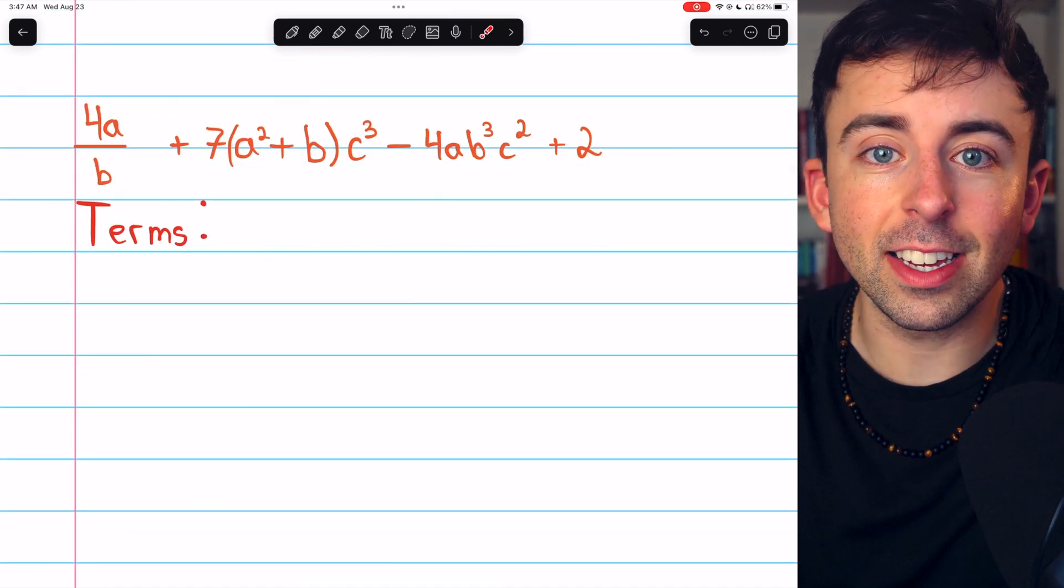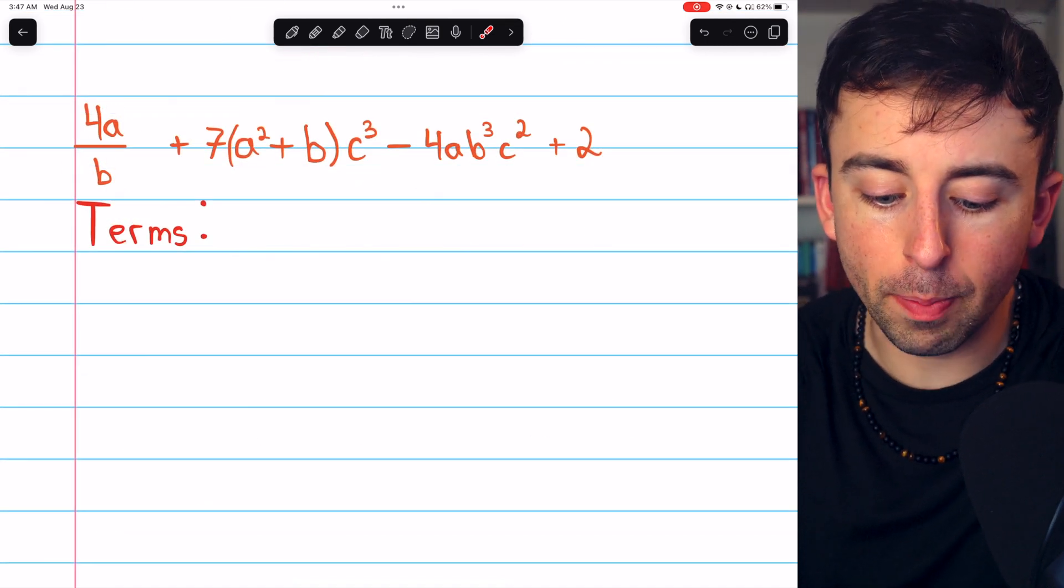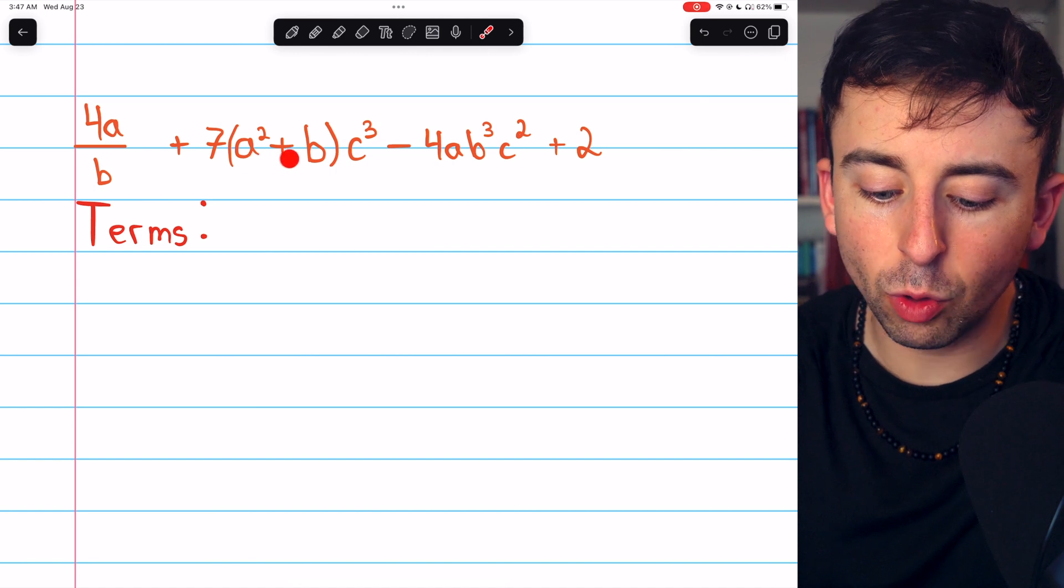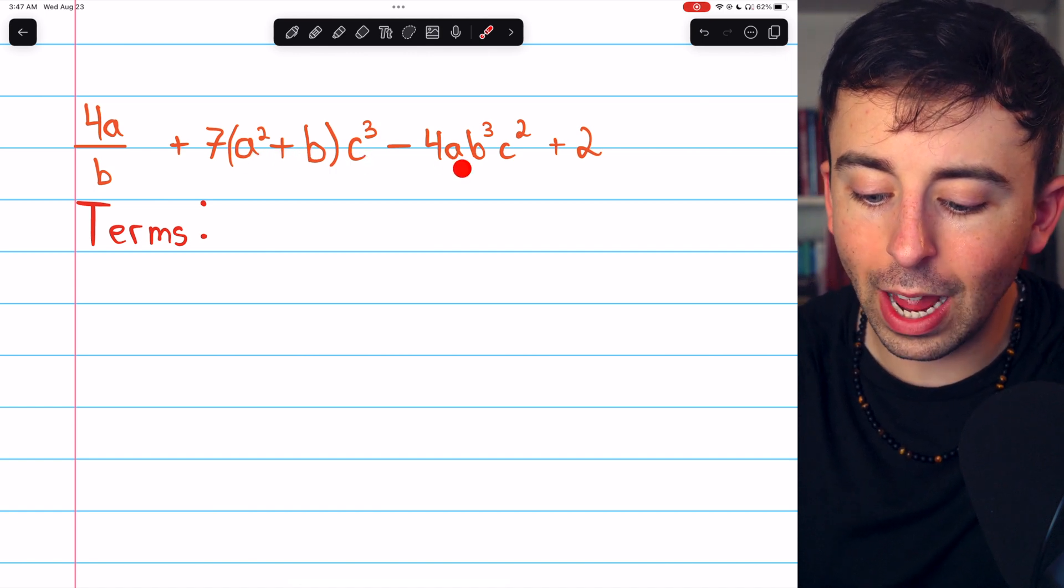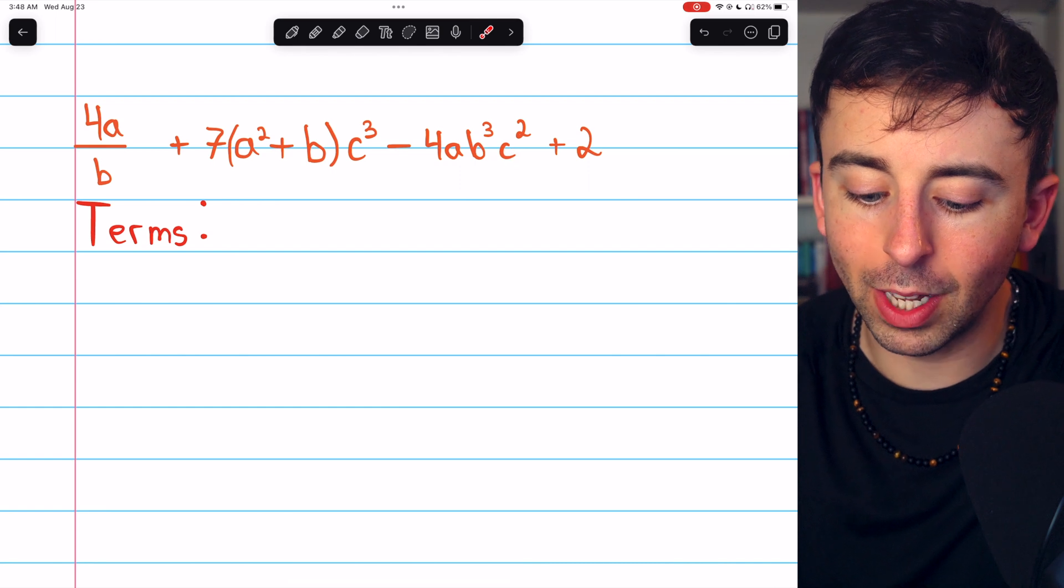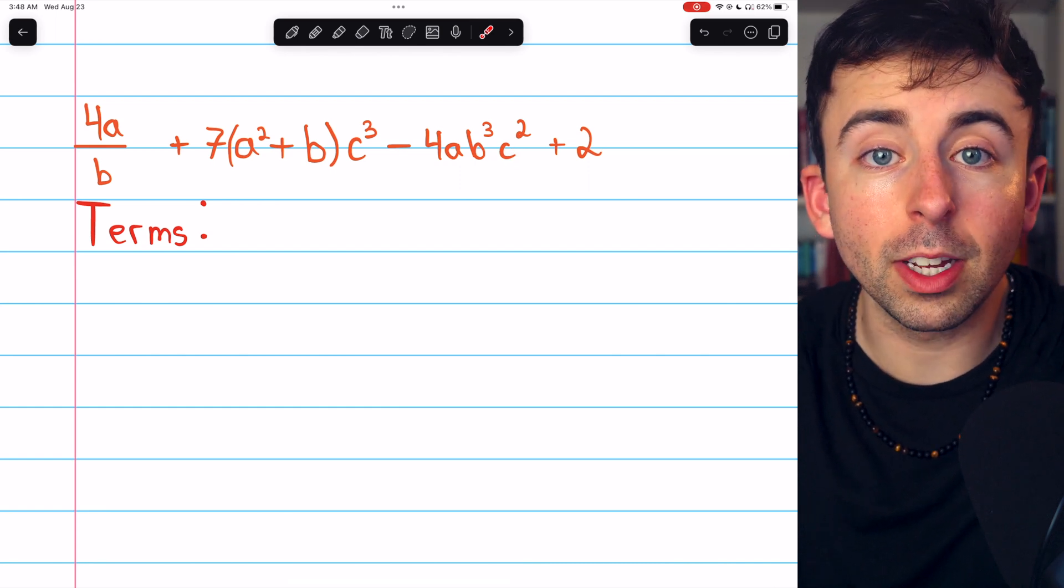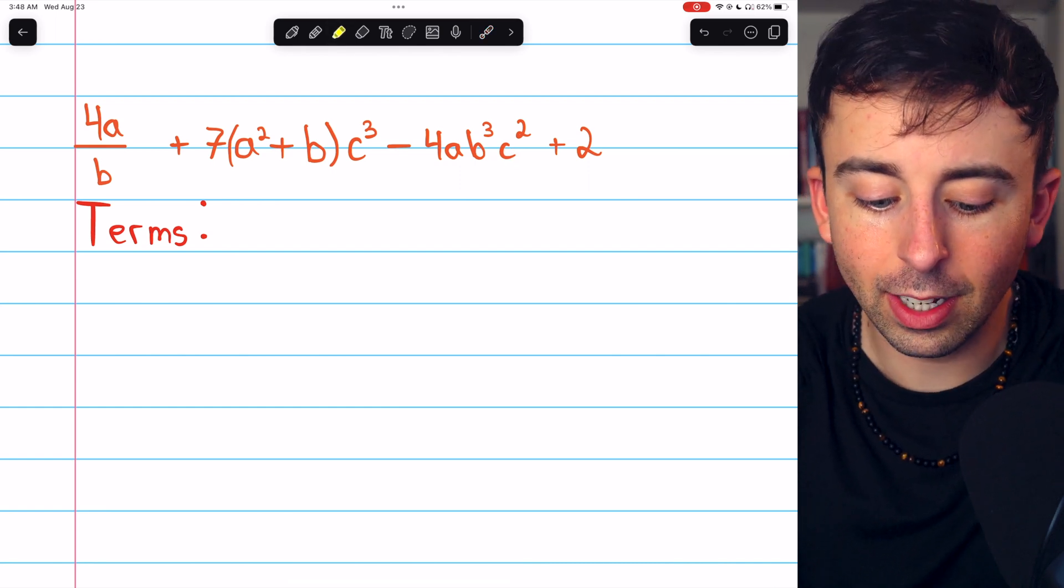Let's finish with this one more ugly expression. 4a over b plus 7a squared plus b c cubed minus 4ab cubed c squared plus 2. The terms are the components being added or subtracted.